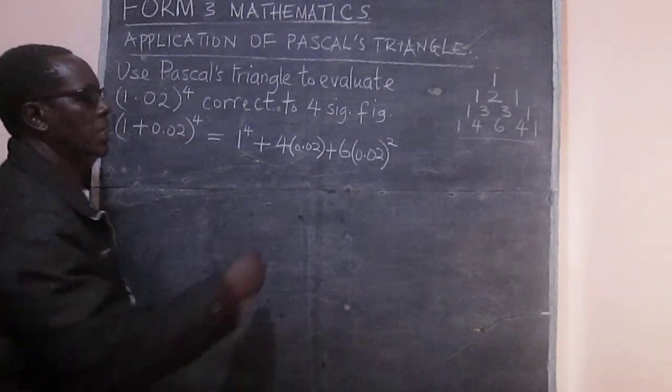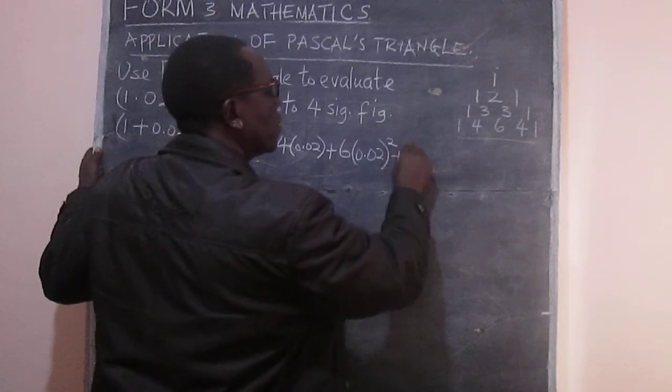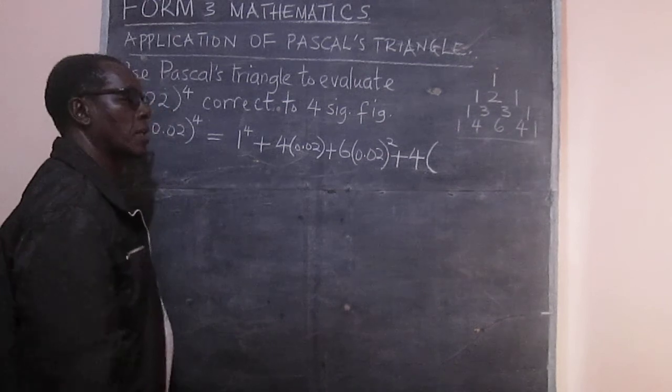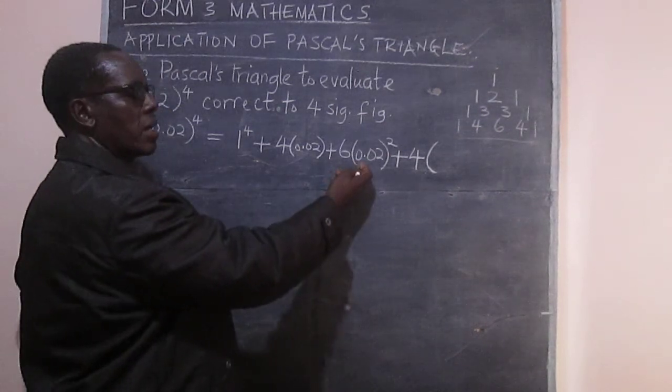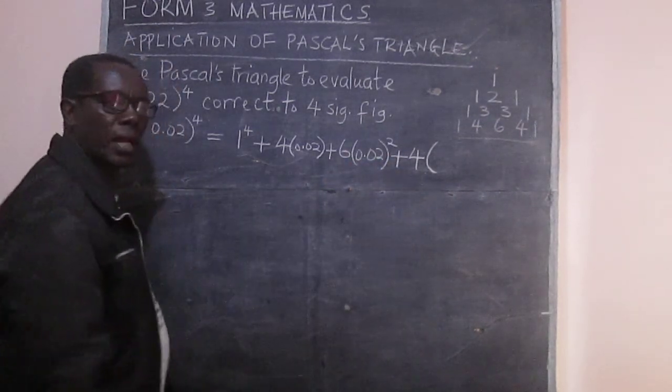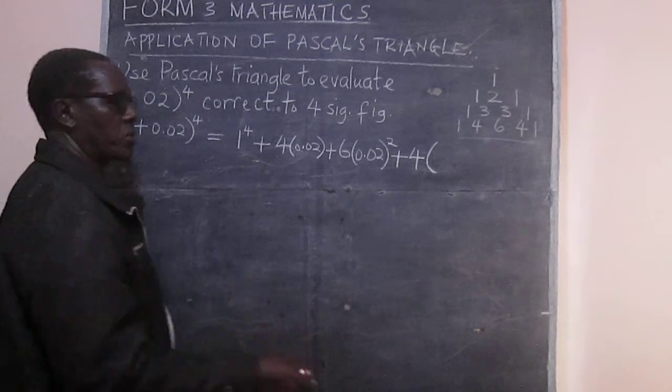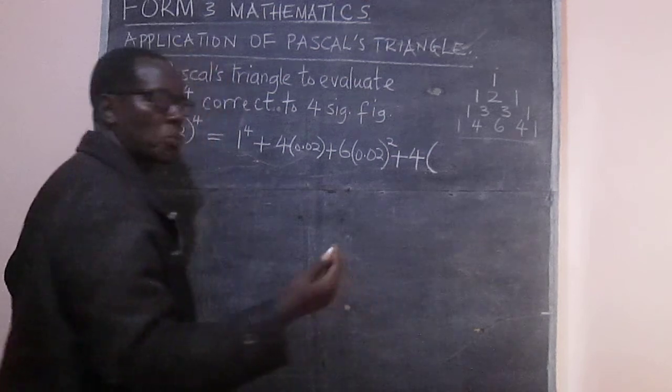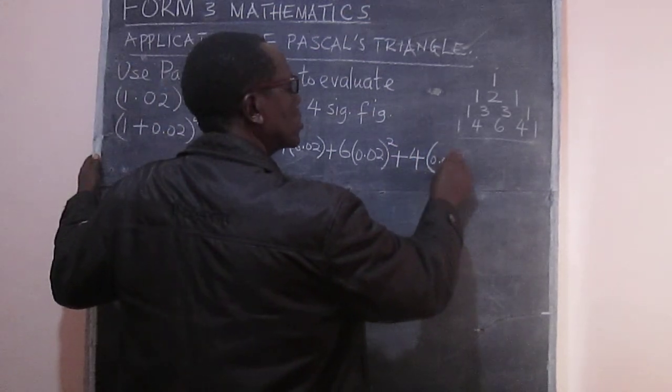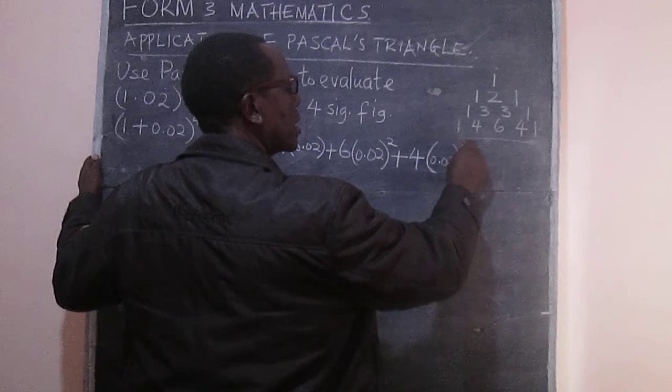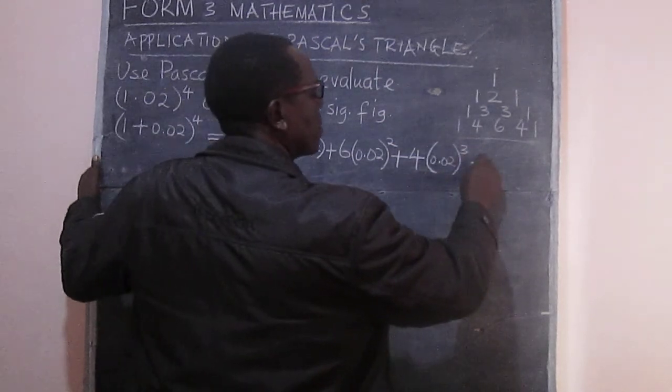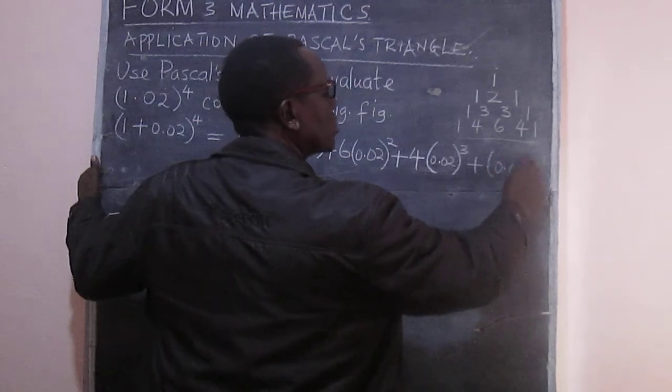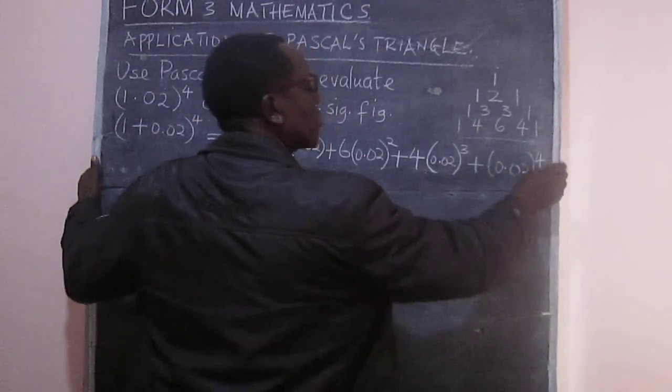And therefore, we can still go to the next one. That's 4. This time now we have a raised to 1 and b raised to 3. So 1 will be raised to power 1, and 0.02 will be raised to power 3. And finally, we shall have 0.02 raised to the power 4.